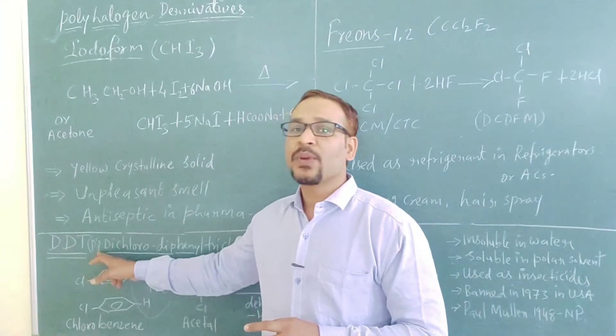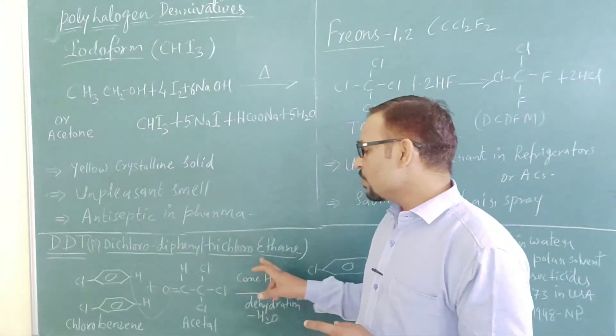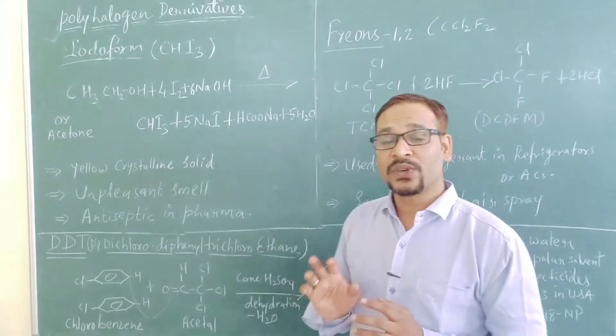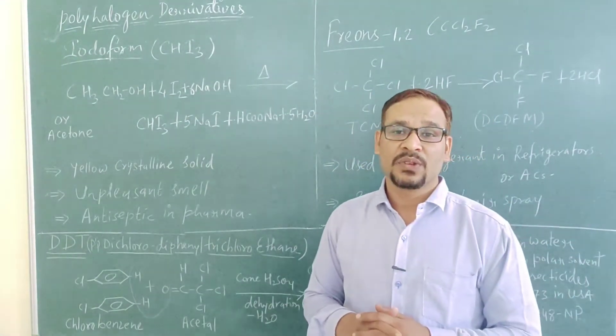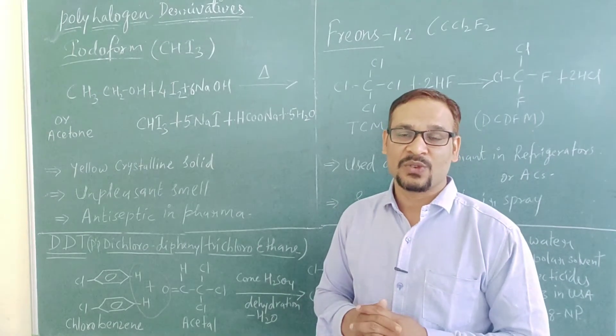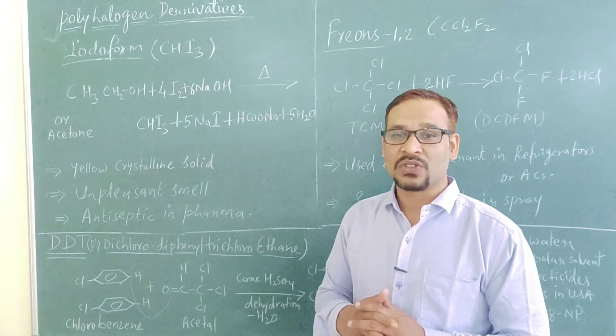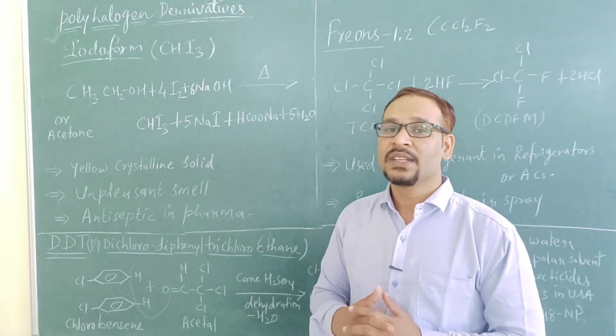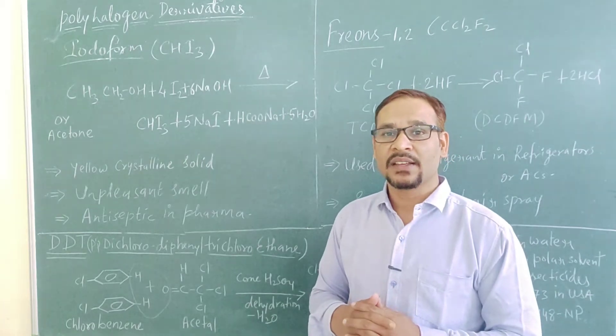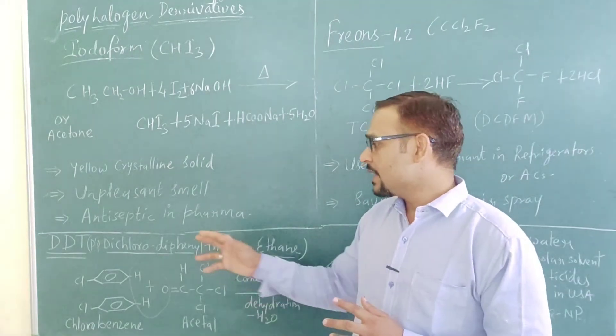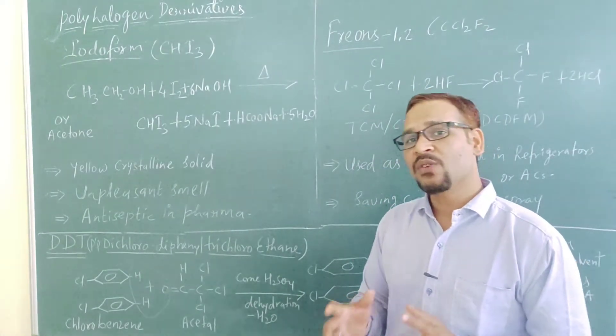Now let's talk about the third very important halogen derivative, that is DDT. What is the full form of DDT? Para para dichlorodiphenyl trichloroethane. This is very important to learn because many times it is asked in your examination. It is definitely a one mark question: full form of DDT.